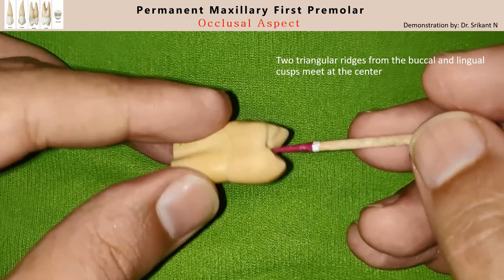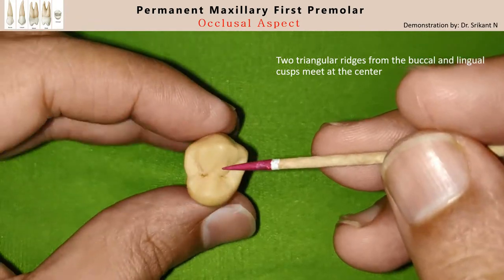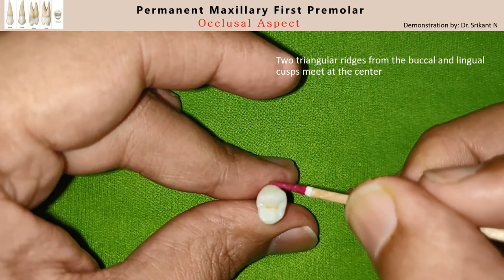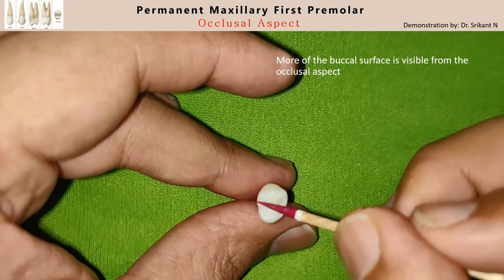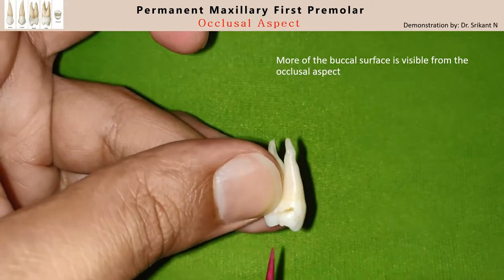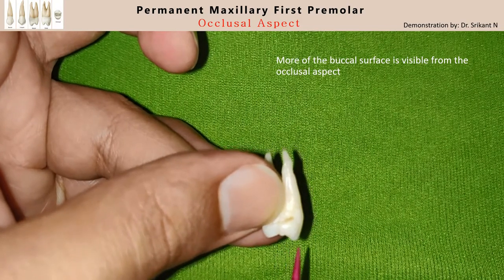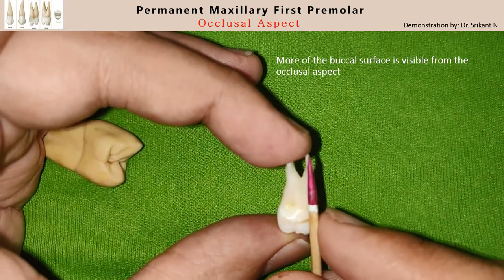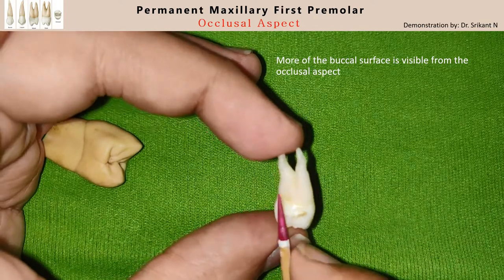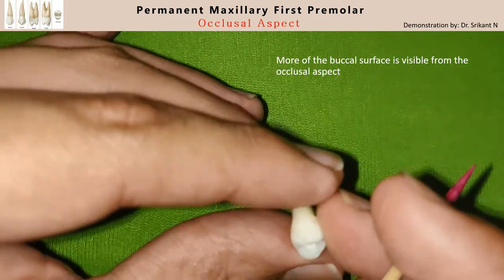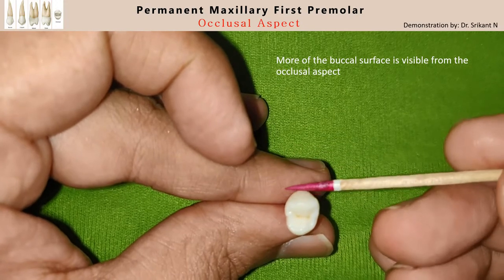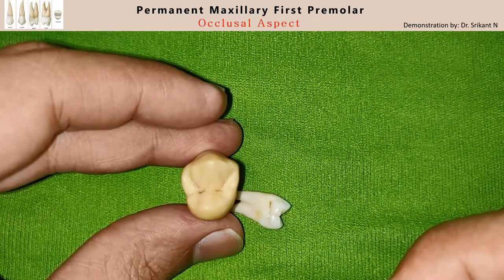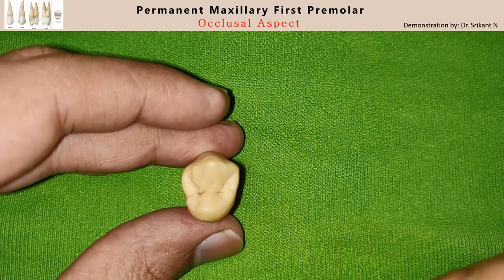Another important point is that more of the buccal surface is visible from the occlusal aspect. This may be because the buccal cusp tip is more inward compared to the lingual cusp tip. If you look at the specimen, the buccal cusp tip is in line with the tip of the buccal root, while the lingual cusp tip is in line with the lingual border of the lingual root. This configuration makes more of the buccal surface visible from the occlusal aspect. These are the features of the occlusal aspect of the permanent maxillary first premolar.